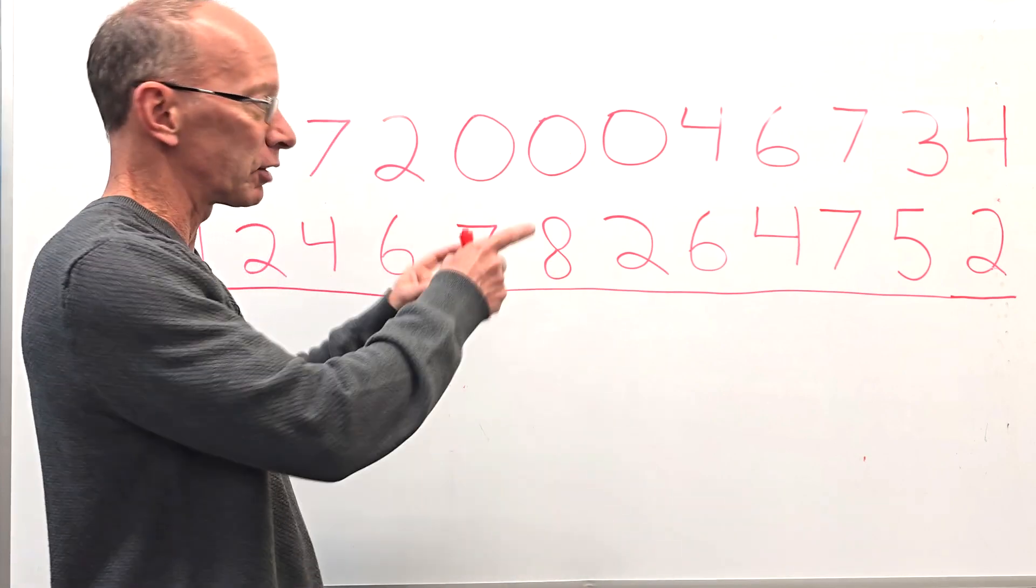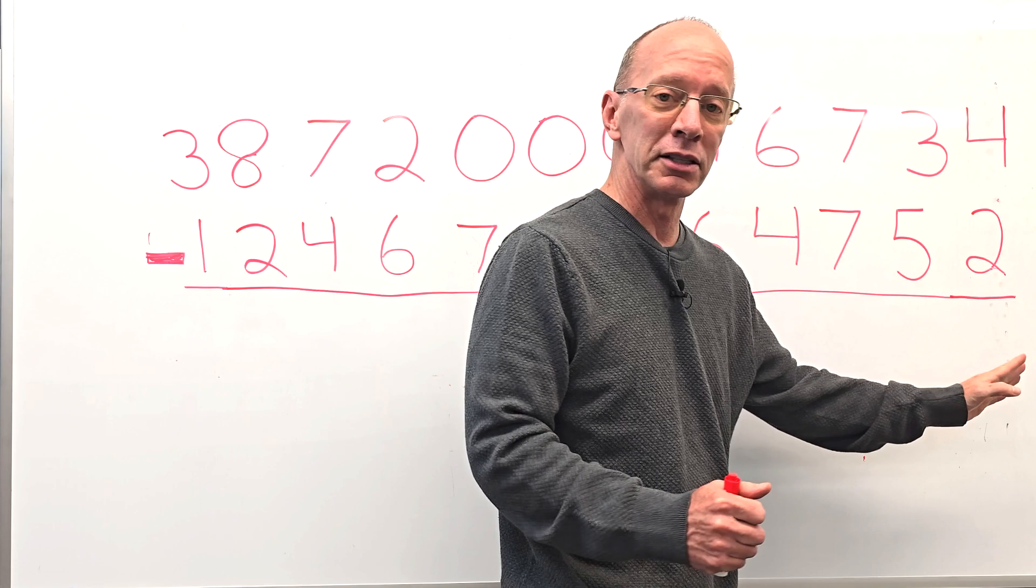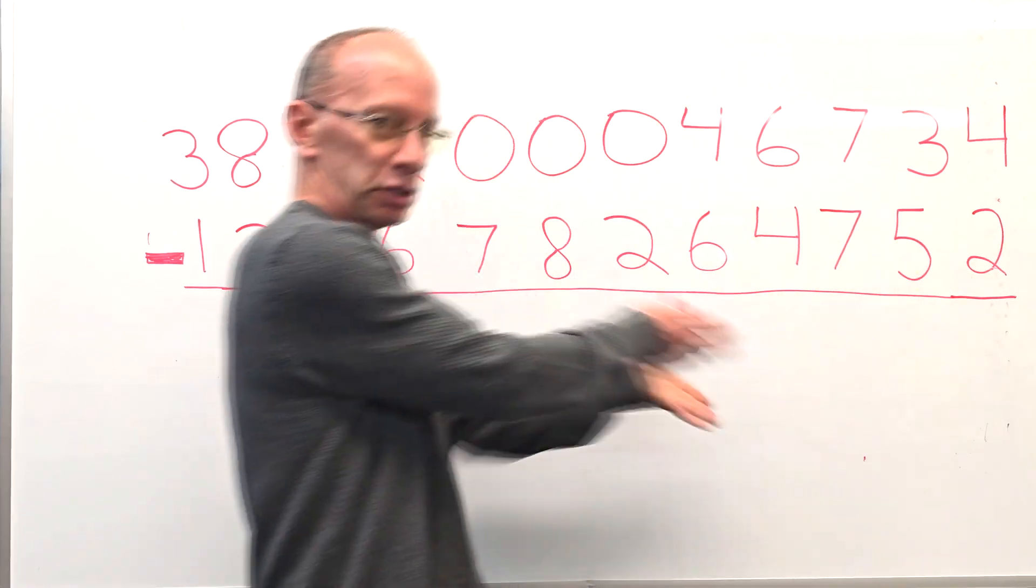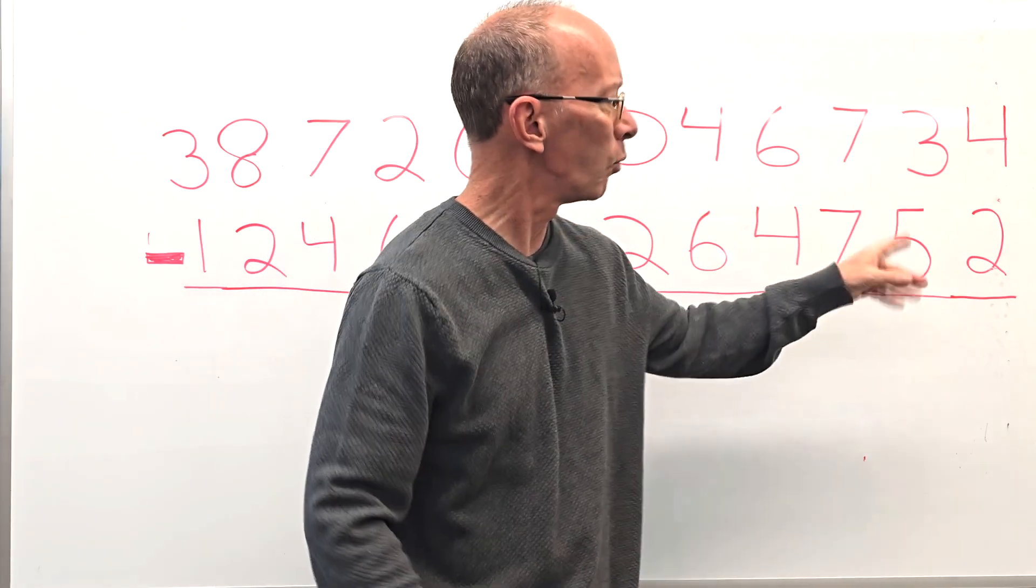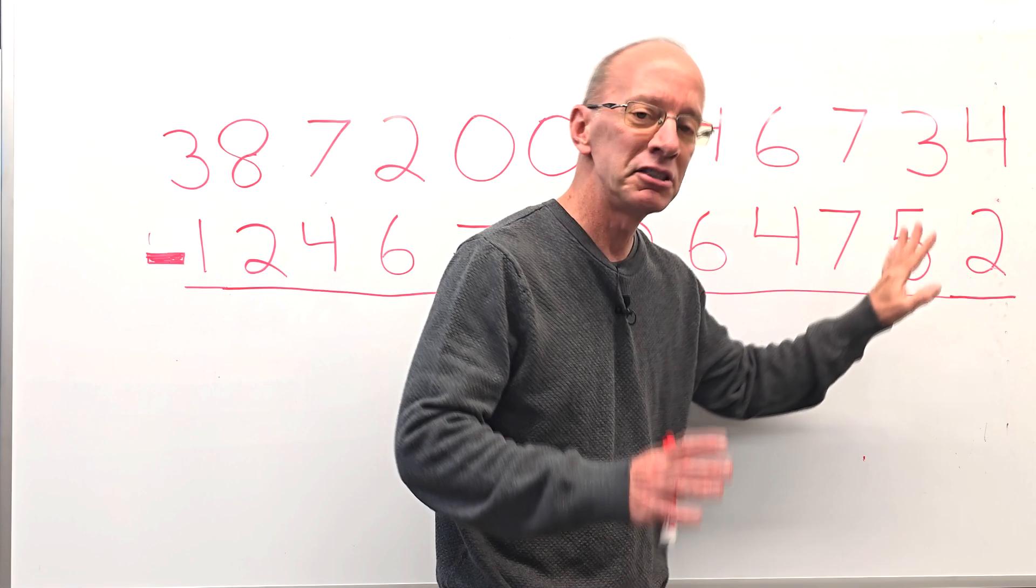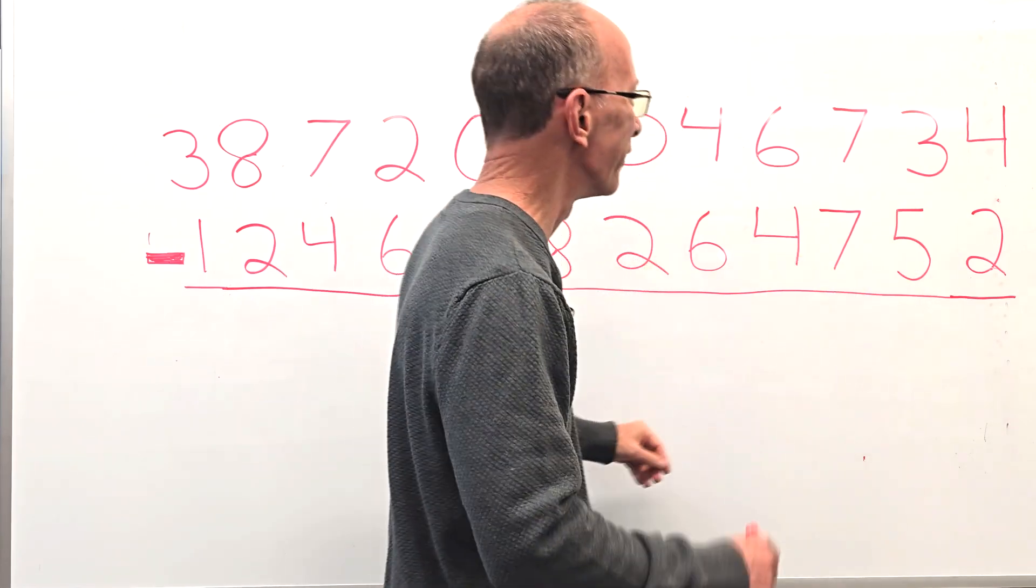Where do we begin? We have to go way over here and start over in the ones right here. This is the ones, the tens, the hundreds, thousands, and so on. But we're going to start way over here on the ones and then just take it slow, easy, cheesy, lemon squeezy.